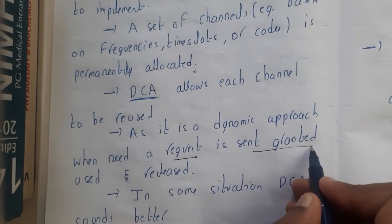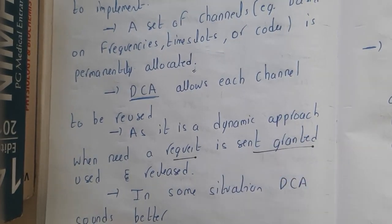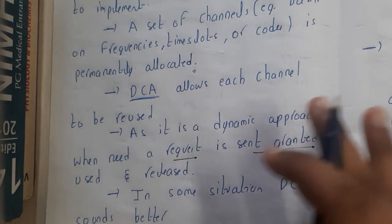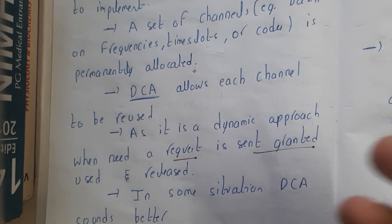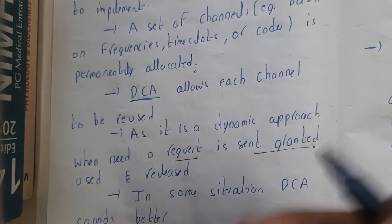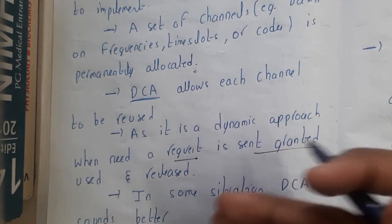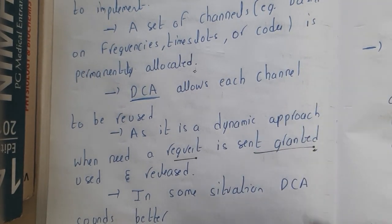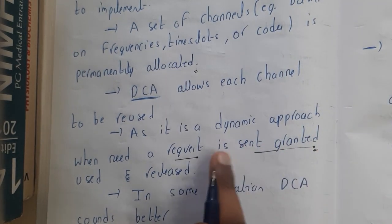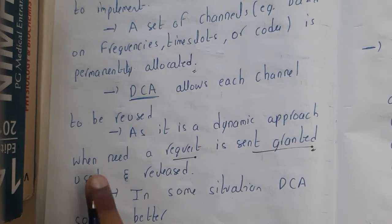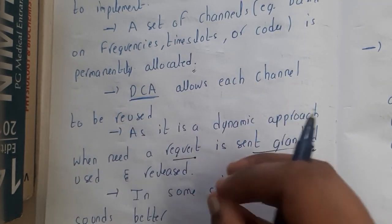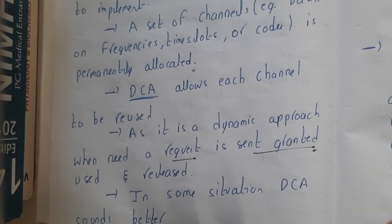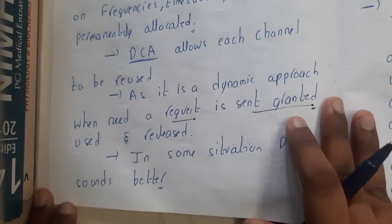You will be requesting a channel, and if the satellite is not busy, your request will be granted. If it is busy, you will hear 'the lines are currently busy, please try again after some time' — which we hear sometimes when calling friends. Once you get permission, you use your required channel and release it when you cut the call, allowing someone else to use it.